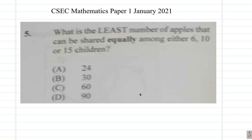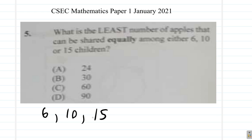What is the least number of apples that can be shared equally among either 6, 10, or 15 children? The least number that can be shared equally — if you have a multiple of each, you could share them equally among these numbers of children. If you had 15 by 2, which is 30...